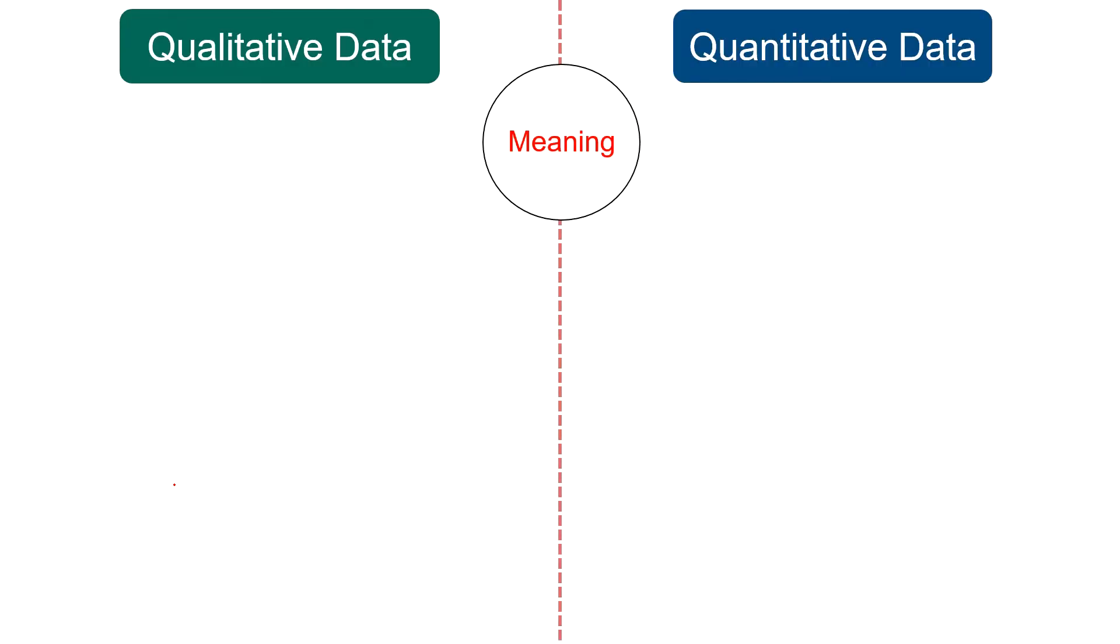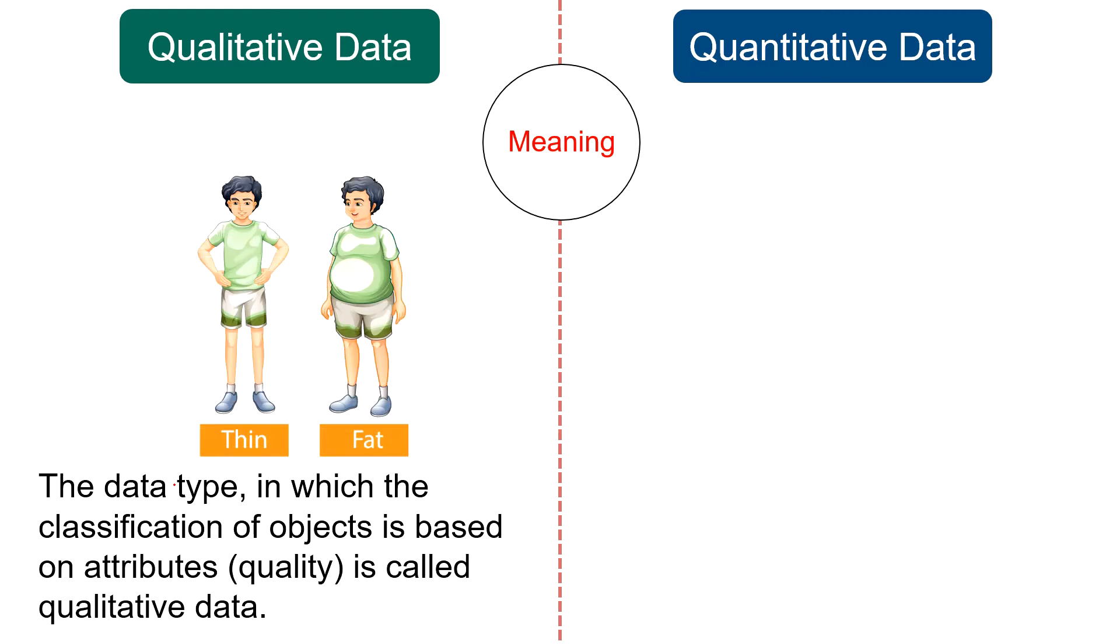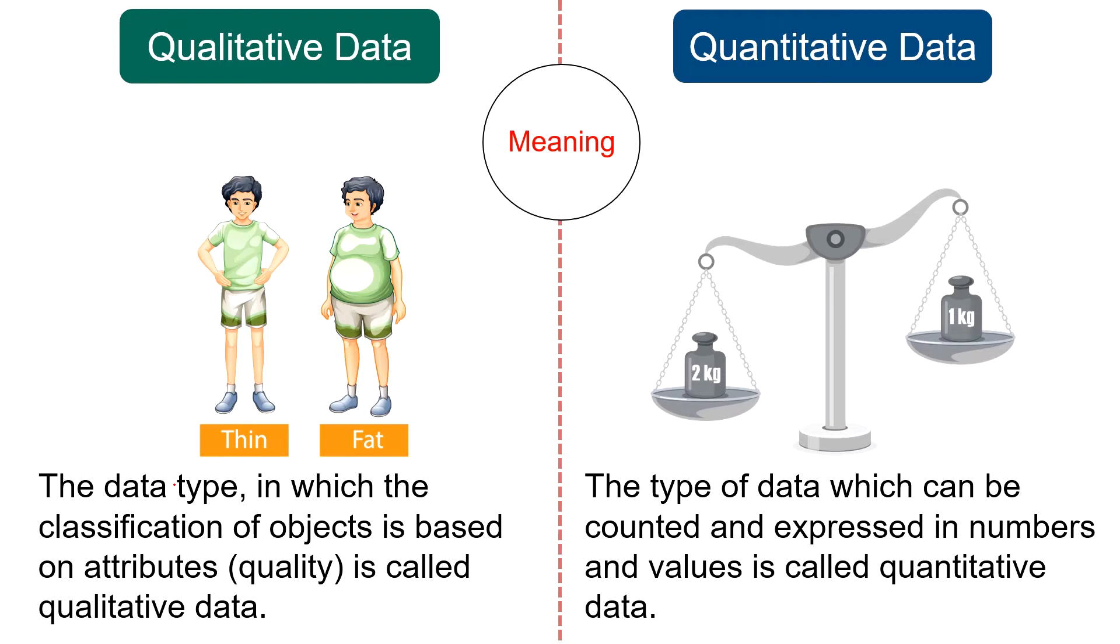Moving on to the difference between qualitative data and quantitative data. Meaning: the data type in which classification of objects is based on attributes is called qualitative data. Qualitative data is non-numerical data which explains opinions and feelings of a person. Whereas the type of data which can be counted and expressed in numbers and values is called quantitative data. It can be numerically analyzed and quantified into solid facts.